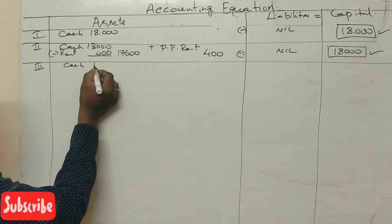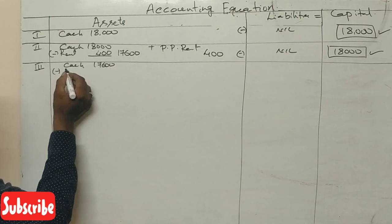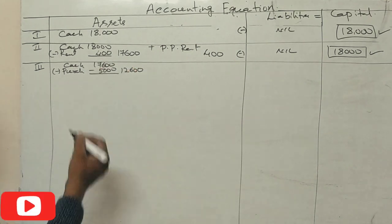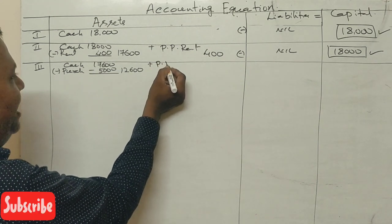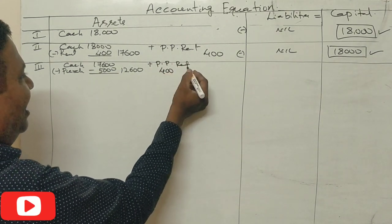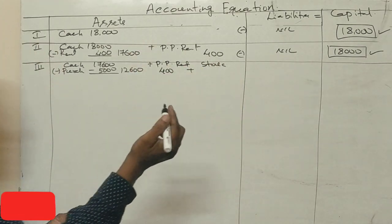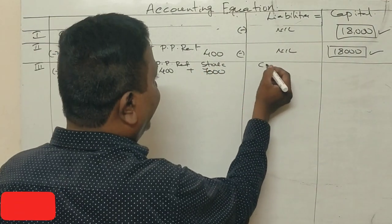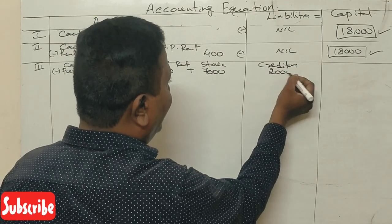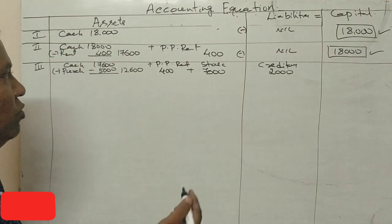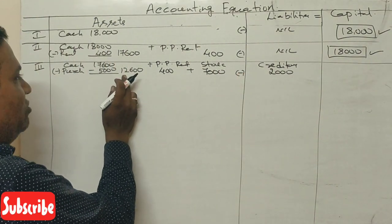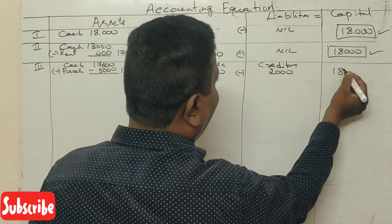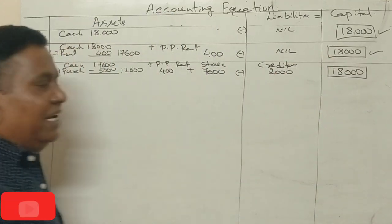Cash was ₹17,600. We purchase goods for cash ₹5,000, so cash becomes ₹12,600. Prepaid rent remains ₹400. Stock is ₹5,000 plus ₹2,000 = ₹7,000. Creditors (liability) = ₹2,000. Total assets: ₹12,600 + ₹400 + ₹7,000 = ₹20,000. Liabilities ₹2,000, capital ₹18,000. Equation balances.